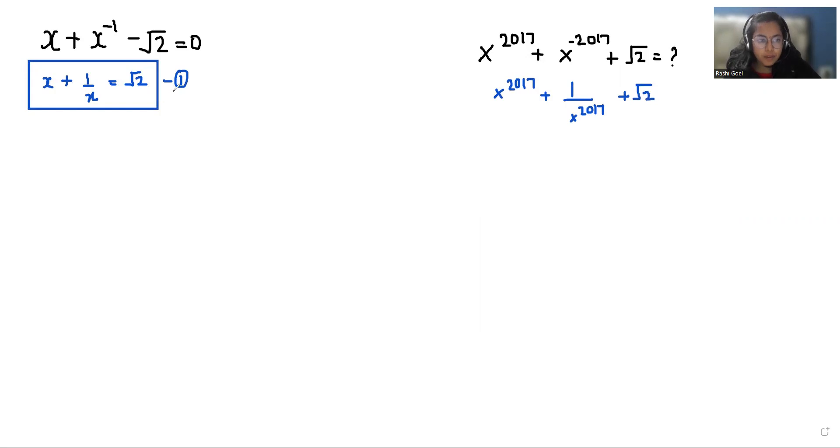Now I am using equation number 1 and doing squaring both sides. So x plus 1 by x whole square equals root 2 square. We can use the very famous identity here: a plus b whole square, that is a square plus b square plus 2ab.